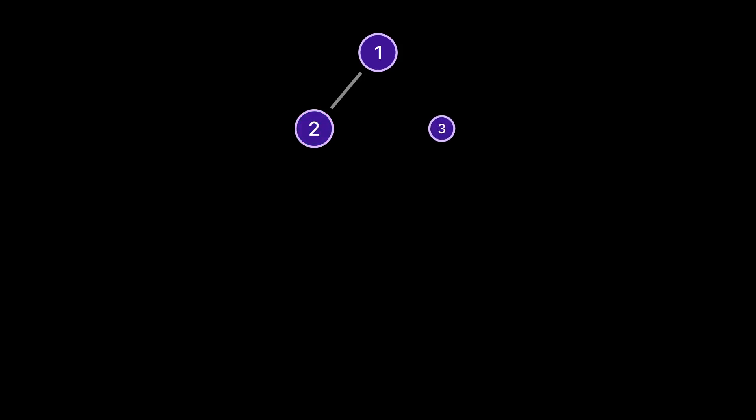Let's add one more child to node 1. Node 1 cannot have more children. Remember, a binary tree node can have only 0, 1, or 2 children. We have a binary tree where node 1 has two children, 2 and 3. And nodes 2 and 3 don't have child nodes.